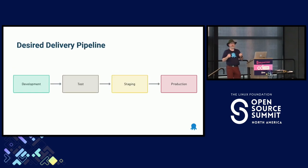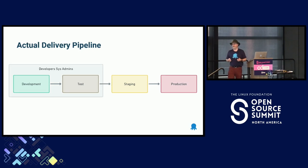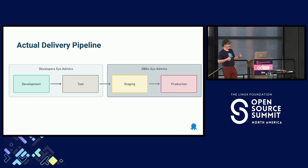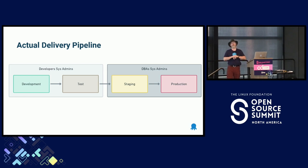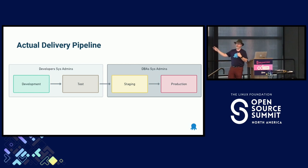We compounded the fact with how we delivered our changes. Our developers were sysadmins in dev and test. The DBAs were sysadmins in staging and production. Because of this, we had a wildly inconsistent approach of how we made our deployments. How we deployed to dev and test was vastly different than how we deployed to staging and production.